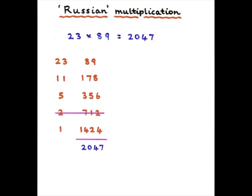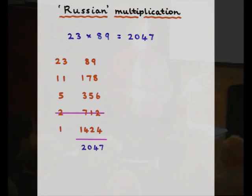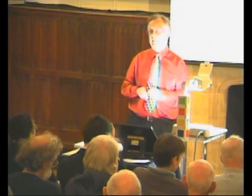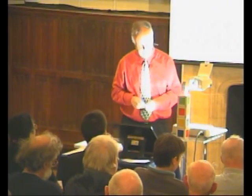What I then do is look and see whether there are even numbers and I cross them out — I cross out that row. I then add these numbers here and I get 2,047. And that's the correct answer. That was a method of multiplication that was used in several cultures for many years.